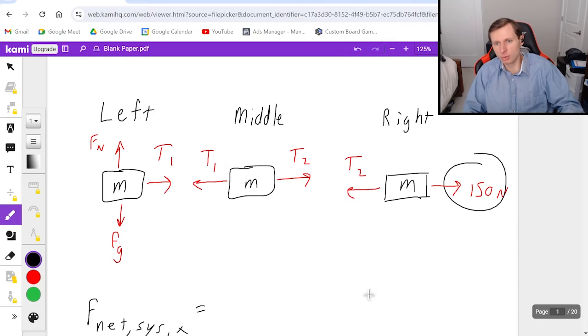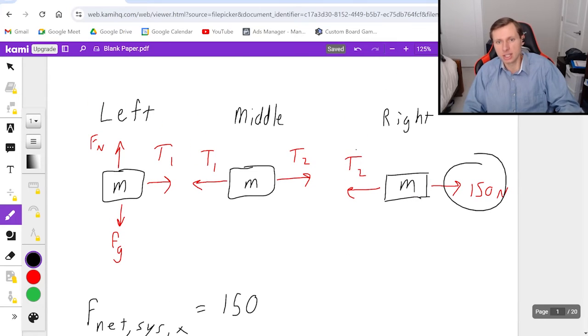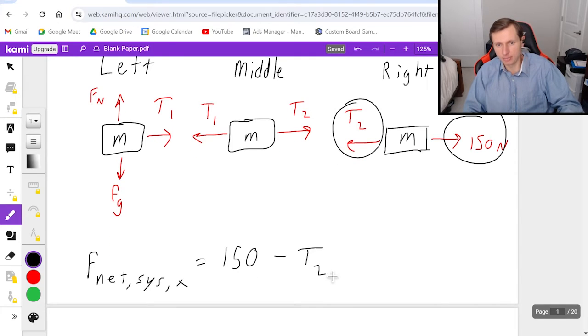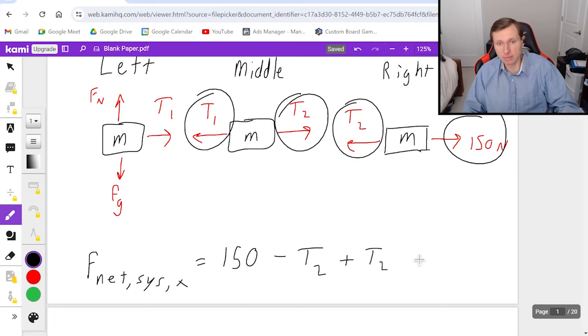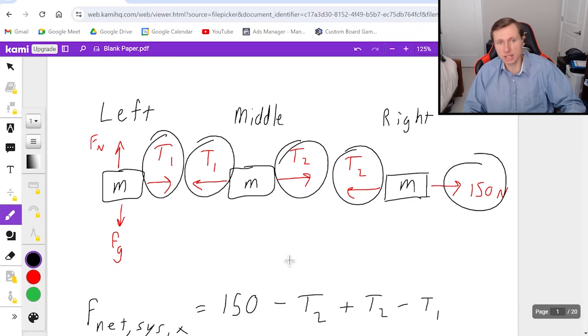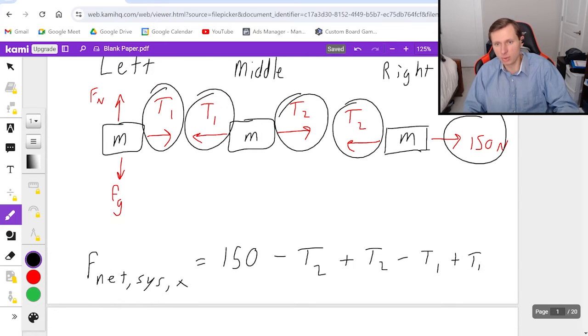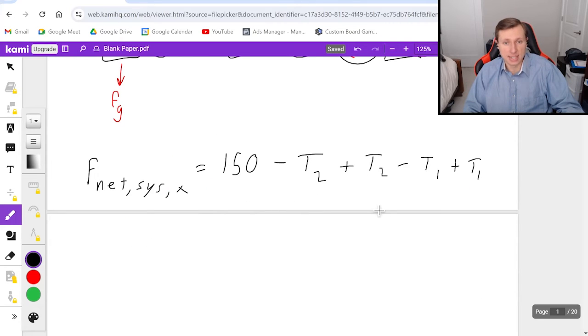So first, I have the 150 newton force, that's to the right, so it's positive. Then T2 here, that's negative, because it points to the left, so minus T2. Then this T2 right here is positive, because it's pointing to the right, so plus T2. Then this T1 here is negative, so minus T1. Then this T1 here is in the positive direction, so plus T1. And normal force and gravity do not matter, because they point in the y direction. So that's it for this.